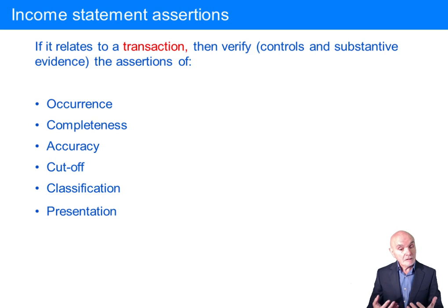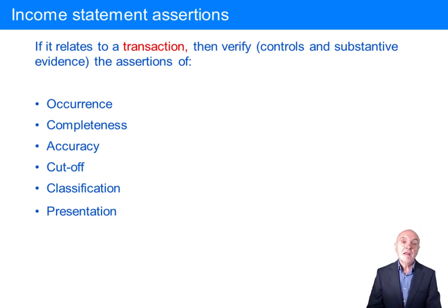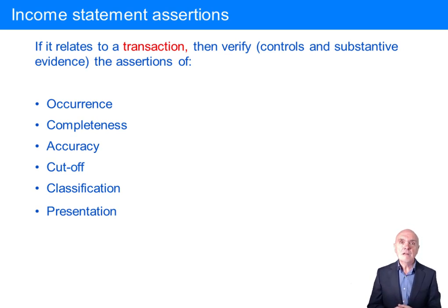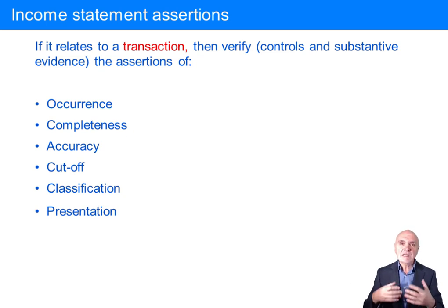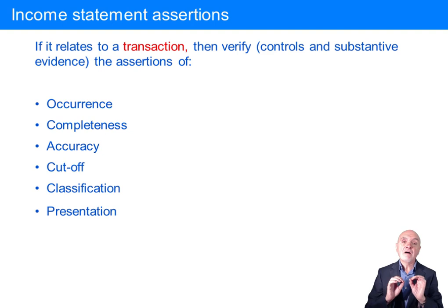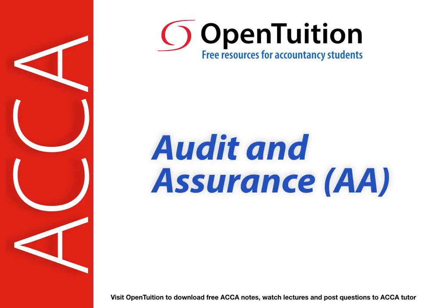That's the way you would ascertain completeness. But much less of these substantive tests would have to be done if the internal control system was watertight. You can rely on the client's system and processes of checks, double checks, authorizations and reconciliations as accomplishing the accuracy required for the financial statements. But assertions are fantastically important.